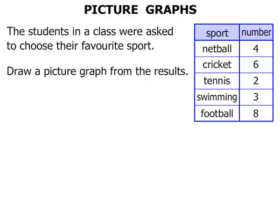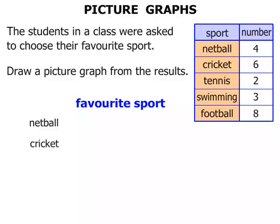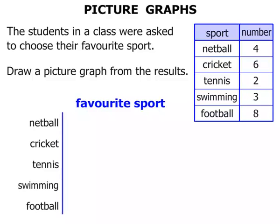Now we need to draw a picture graph from the results. The title of the graph is 'Favorite Sport.' Let's write down the various sports: netball, cricket, tennis, swimming, and football. We can draw a line to separate the labels.